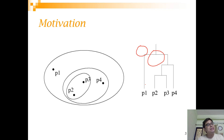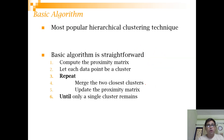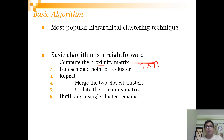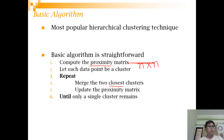Agglomerative clustering is the most popular hierarchical clustering technique and the basic algorithm is straightforward. We start by computing a proximity matrix — a distance matrix where, if you have n points, you calculate the distance of each point with all others to get an n×n square matrix. We start by putting each data point in its own cluster, then merge the two closest clusters using the proximity matrix. After each merger, we update the proximity matrix and continue until only a single cluster remains.